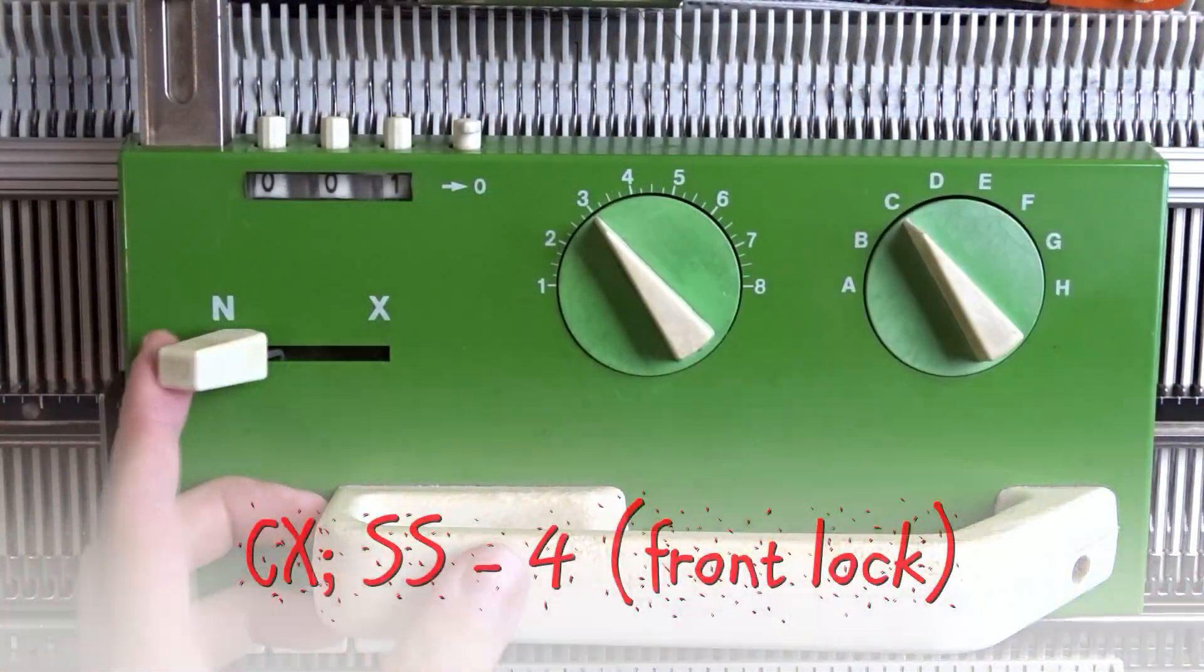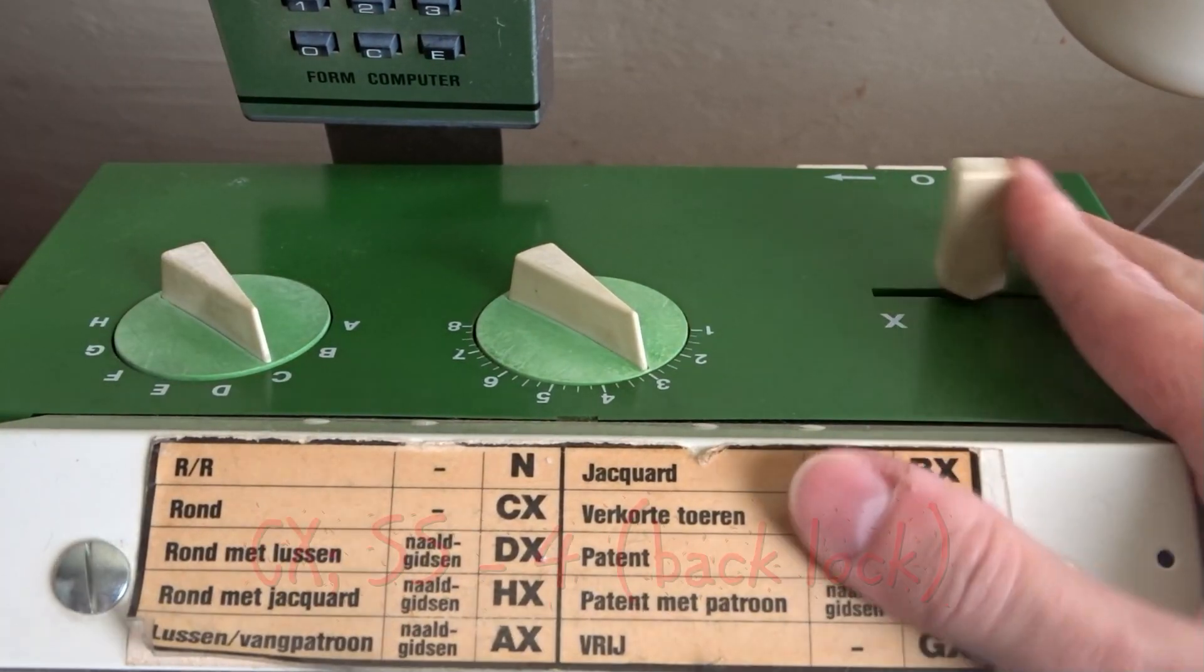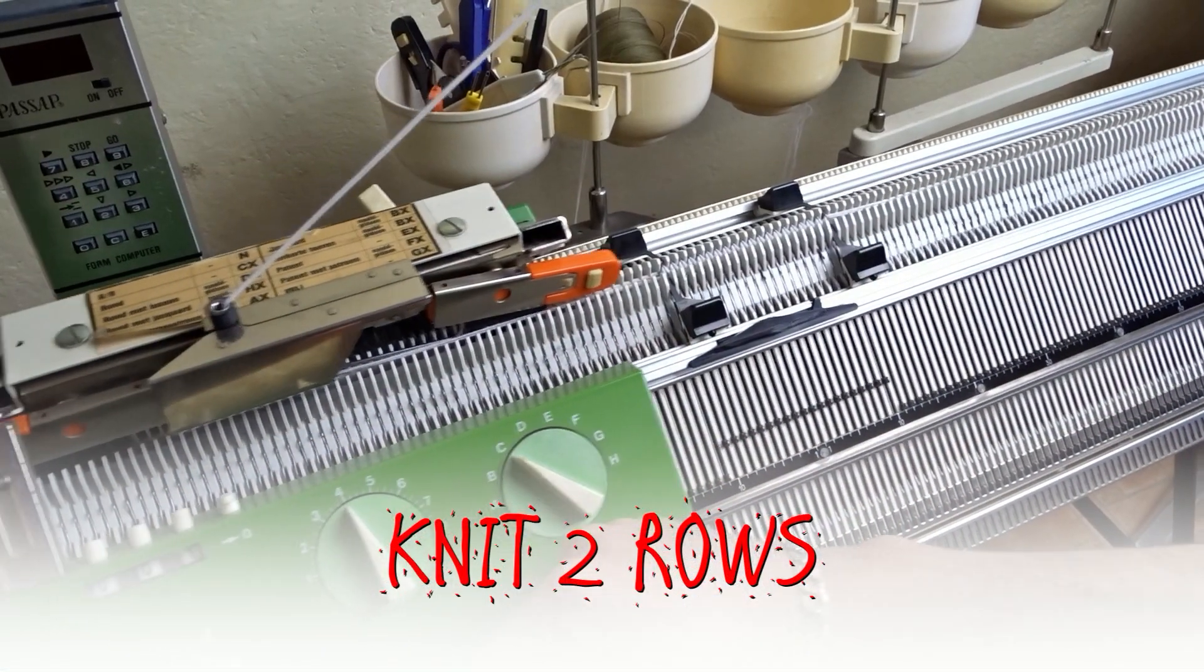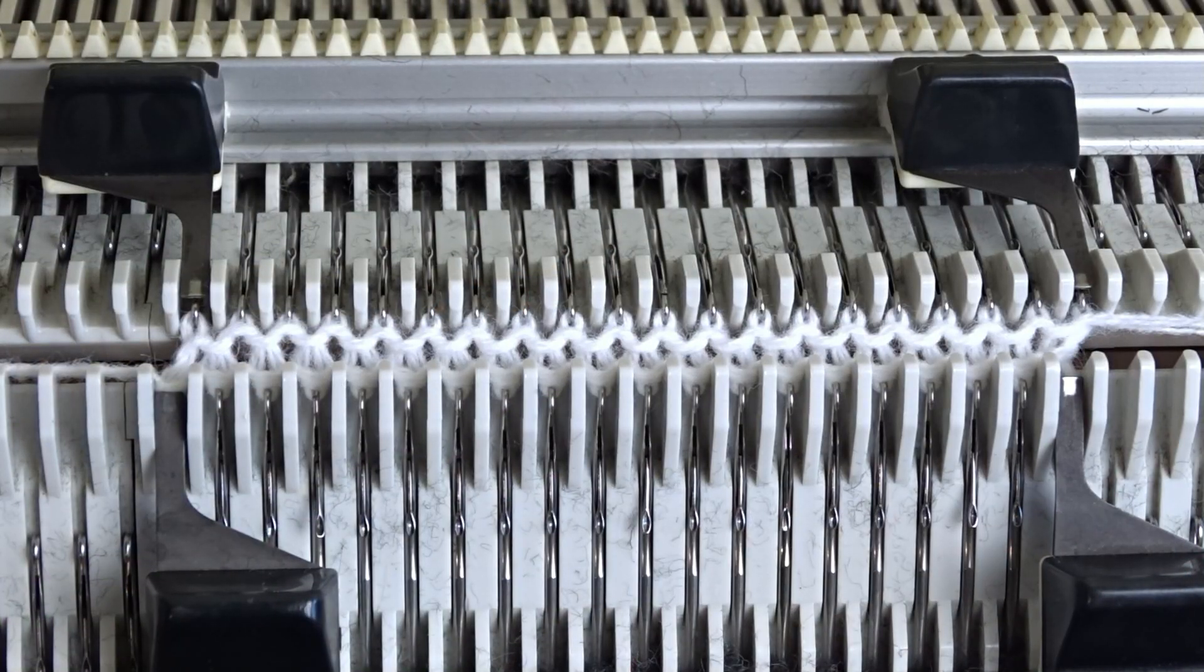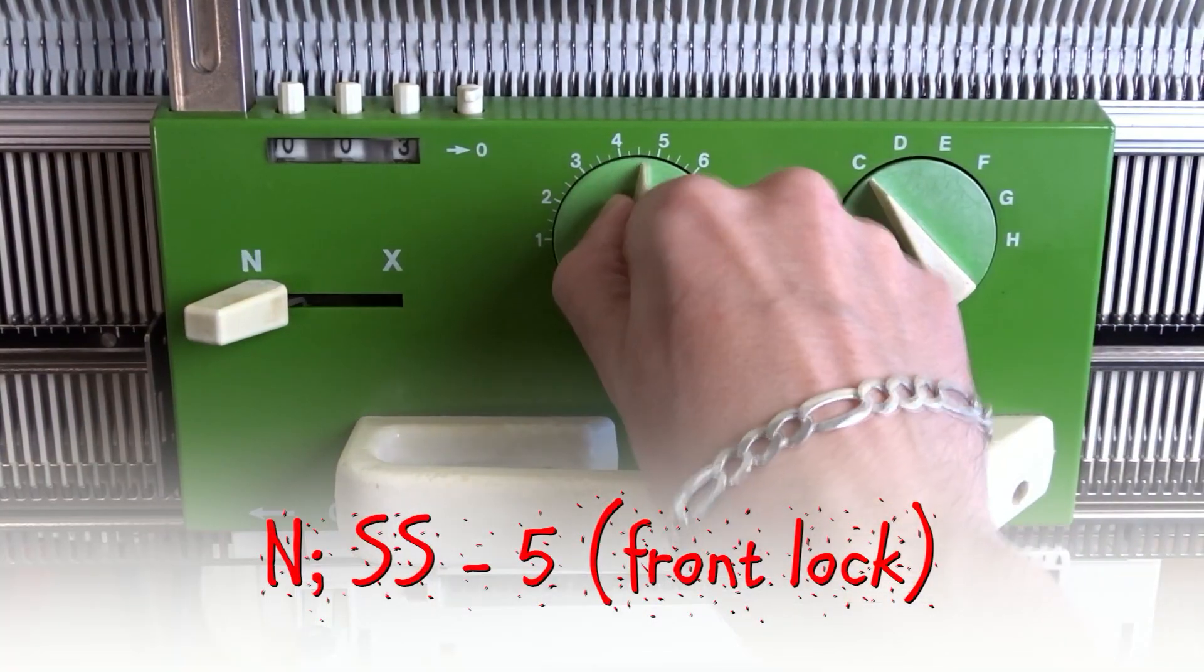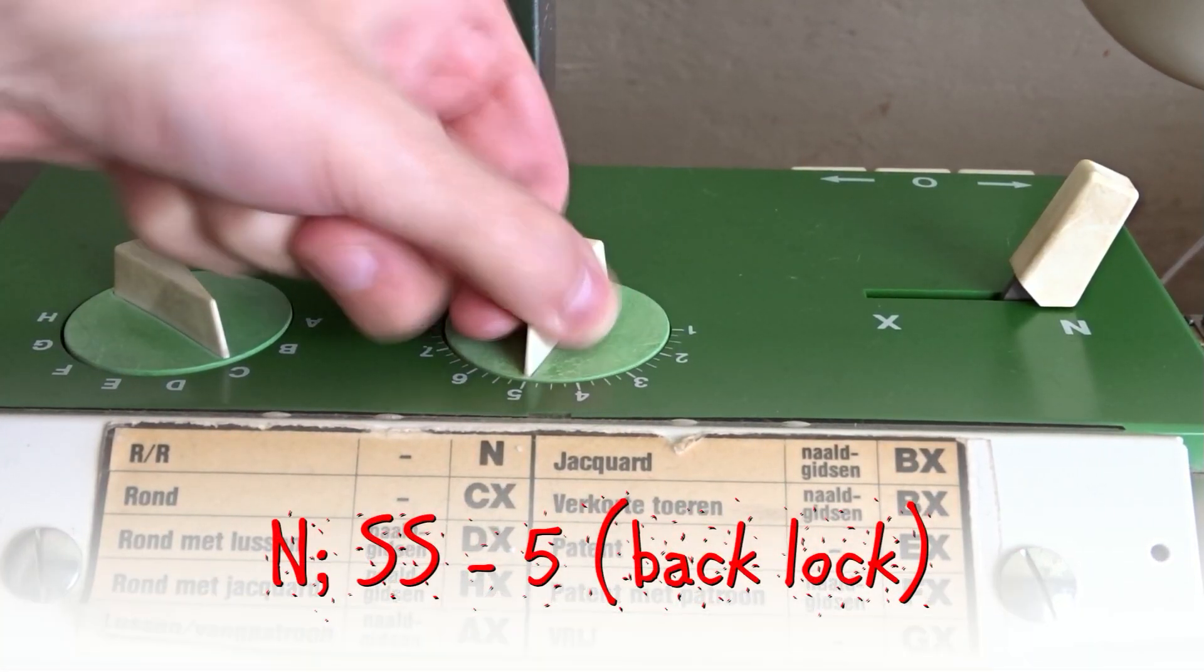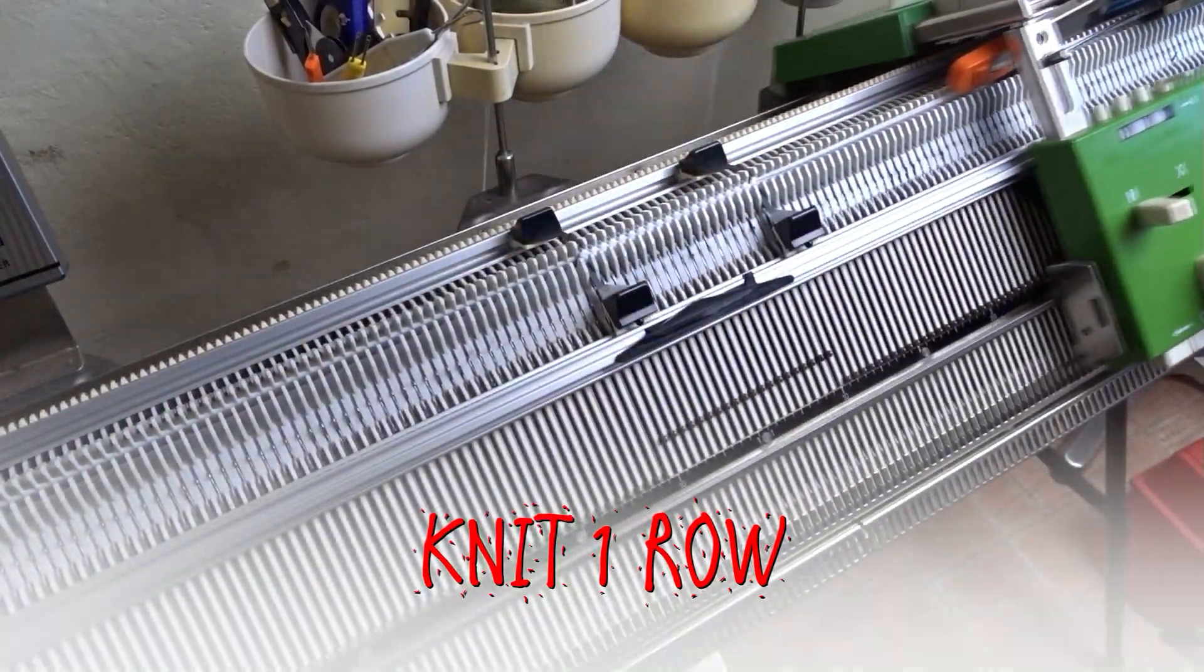Set both locks to CX and increase the stitch size to 4. Now knit two rolls. Set both locks to N and increase the stitch size to 5. Knit one roll to finish the cast on.